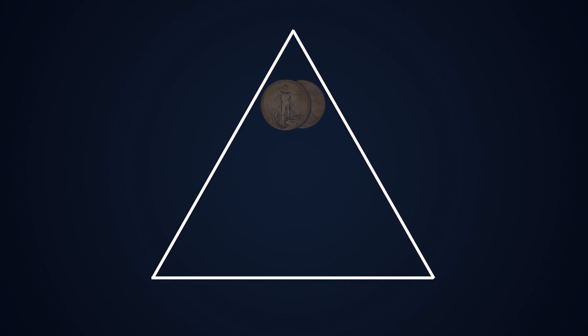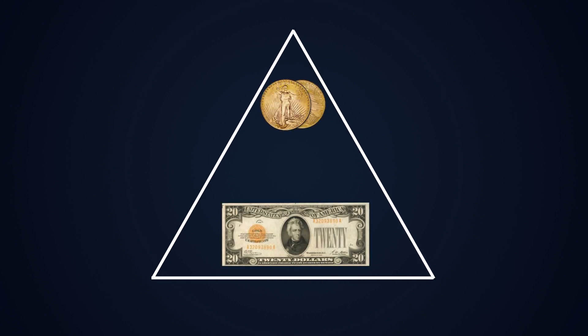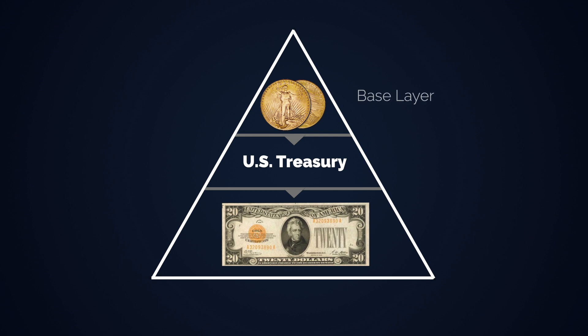The easiest way to understand layered money is gold and gold certificates from 1928. Gold is held in central banks and gold certificates are used for easier payment, and they can be exchanged with each other. In this case, gold is the first layer money and the certificates are the second layer money. Nick built the layers in a way so that the first layer is always the one on the top — in this example gold — and new layers are added from there.